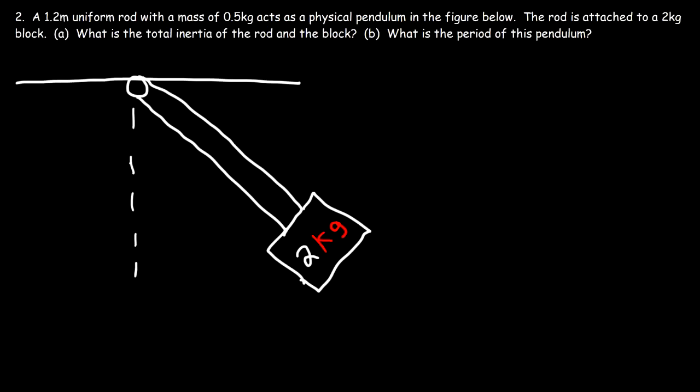Now how can we calculate the period of a physical pendulum if the rod is attached to a block? The length of the rod is 1.2 meters — it's once again a uniform rod — and the mass of the rod is 0.5 kilograms. What is the total inertia of the rod and the block? Let's say the mass of the rod is capital M and the mass of the block is lowercase m.